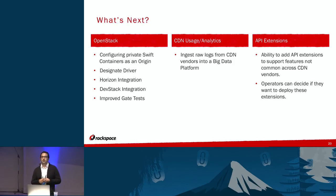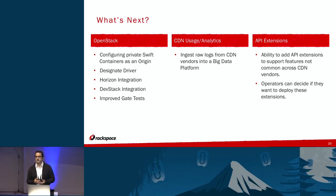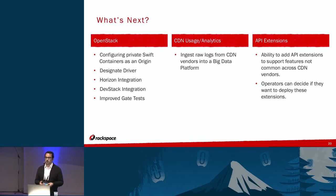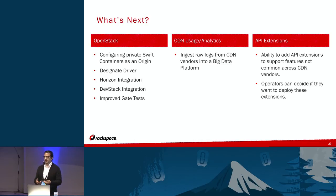For users, one of the biggest requests from our customers is they want to see analytics. We already get the raw logs from the CDN providers. The work we've started doing is taking those raw logs and pushing them into big data — using Sahara, getting the logs in there. Once it's in big data, we can do all the MapReduce jobs, put it into an analytics database, and then query it and show pretty graphs on Horizon.